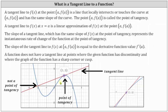If we zoom in on the point of tangency, which I have done here on the right, we can see as we get closer and closer to the point one comma three that the red tangent line does have the same slope as the blue curve at the point one comma three.